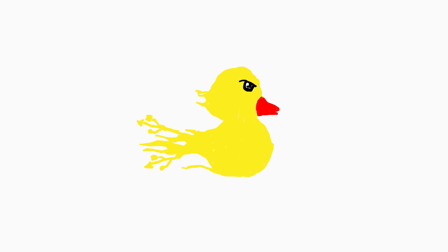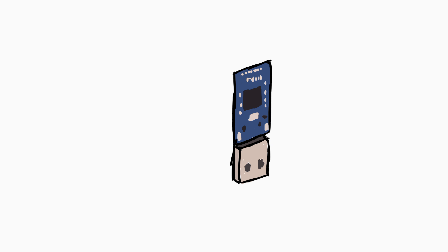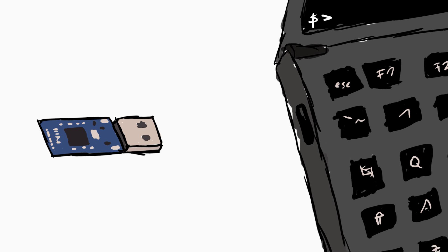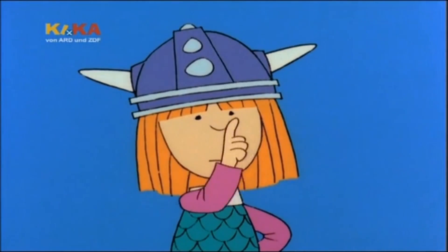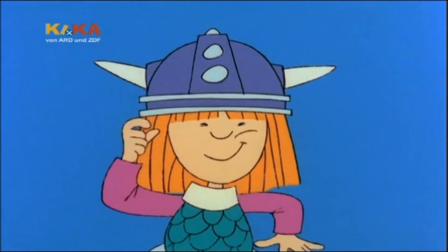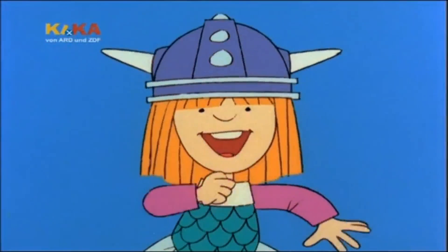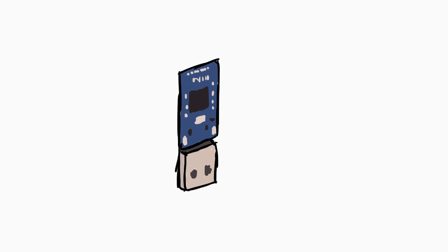So here is my rubber ducky tutorial. The rubber ducky is the name for a USB device that identifies itself as a keyboard. You can program it so that it automatically types whatever you want — for example, you can use it to open a terminal and type in commands to create a backdoor or download and install a rootkit. Done. That's the whole tutorial. There's nothing else to say. When I heard that for the first time, my reaction was: huh, that's actually a pretty clever hack. This idea never came to my mind.